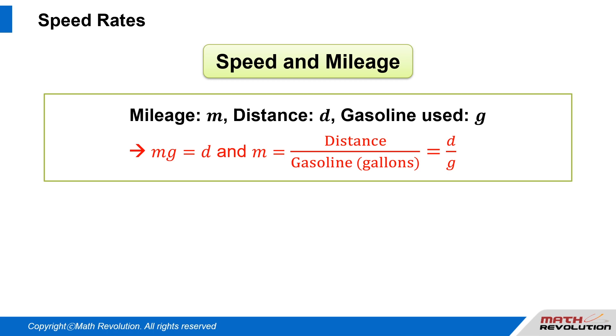Mileage: Let the mileage be m, and the gasoline used to travel distance d be g. Then m times g equals d. Also, mileage m equals distance over gasoline in gallons, which equals d over g.